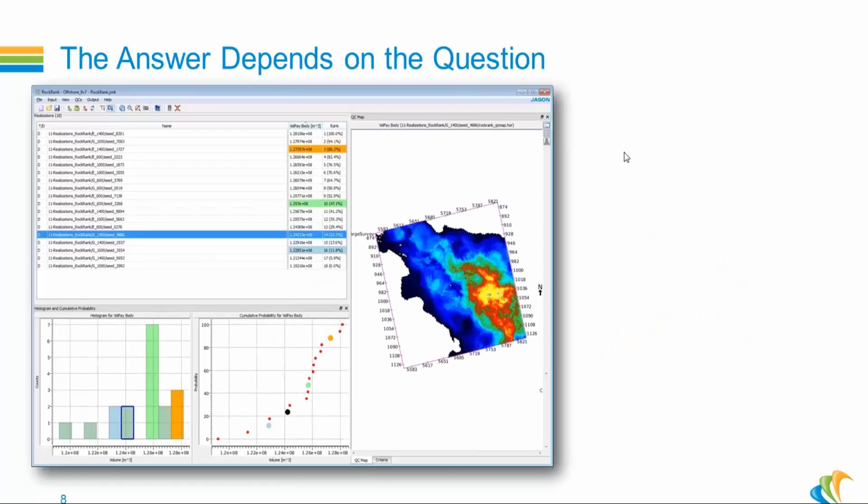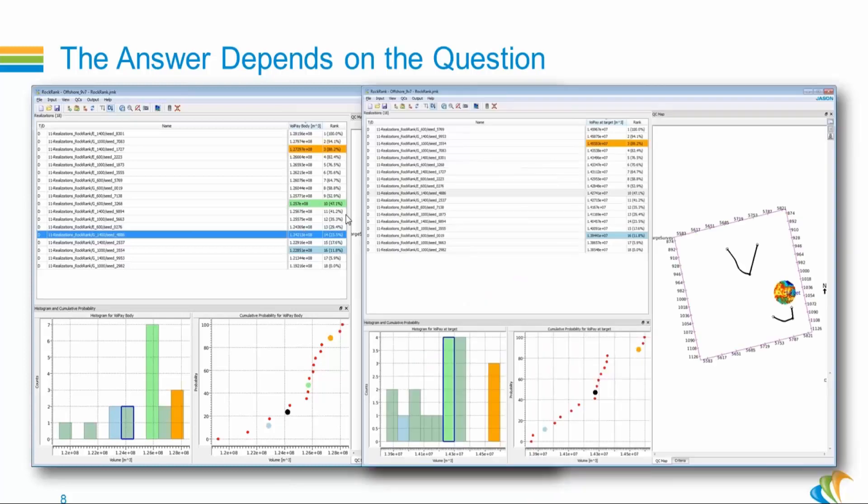Let me illustrate this with an example, showing the same set of realizations ranked using two different criteria. One criteria is the volume of pay within the largest body in the realization. And the other one is the volume of pay within 300 meters around the planned well.